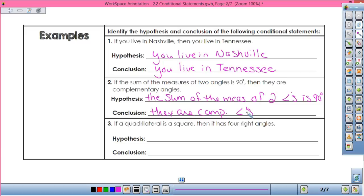Okay, three, if a quadrilateral is a square, then it has four right angles. Hypothesis: quadrilateral is a square. Conclusion: has four right angles. So far so good. Hypothesis is the if part, conclusion is the then part.